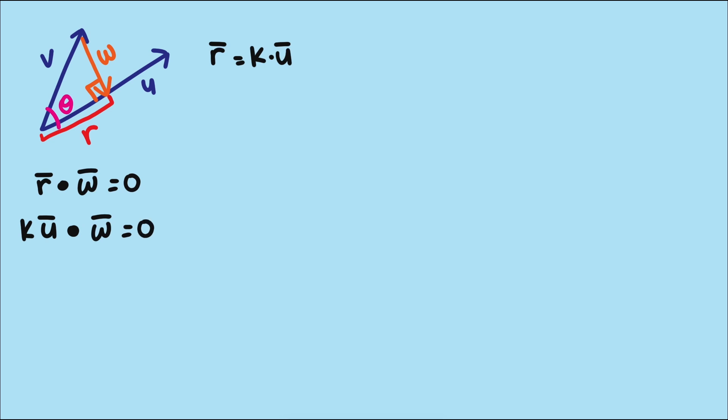And as we mentioned in the last video, we can distinguish between scalars like k and vectors like u with this notation. So we can also think of w as the difference between vector v and r. And r is k times u.